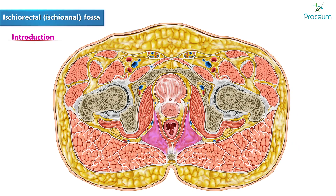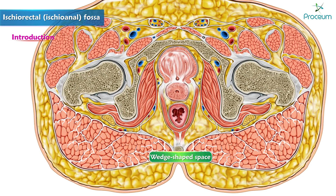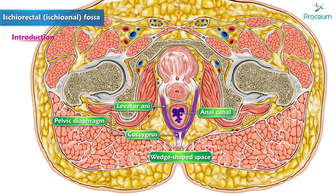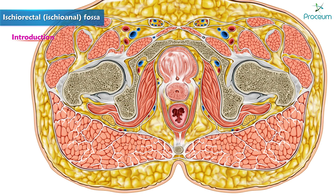Anatomy of the Ischiorectal, also known as the Ischioanal Fossa. The Ischiorectal Fossa is a wedge-shaped space situated on either side of the anal canal, below the pelvic diaphragm. This fossa is occupied primarily with fatty tissue surrounding the anus and the urogenital hiatus.